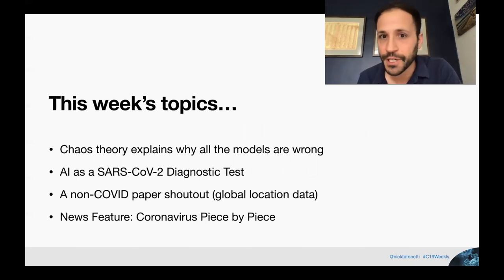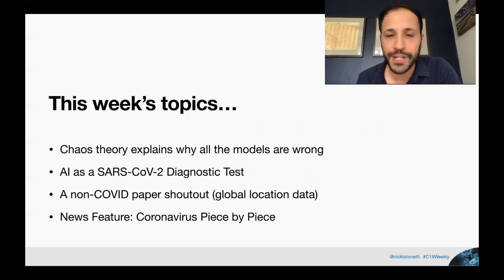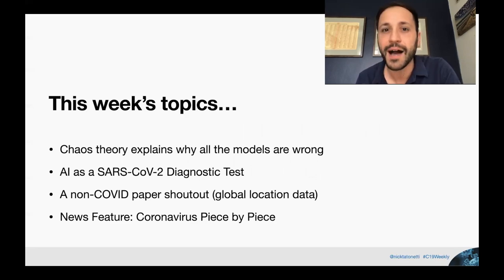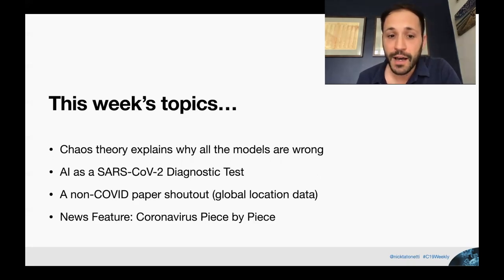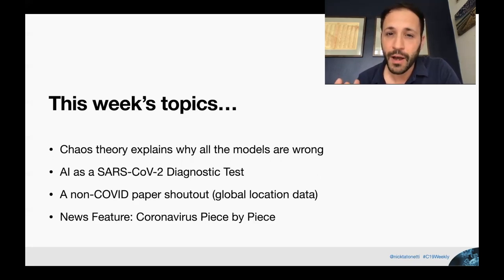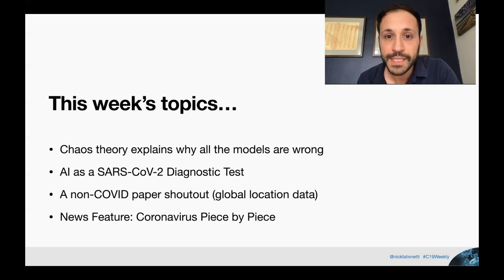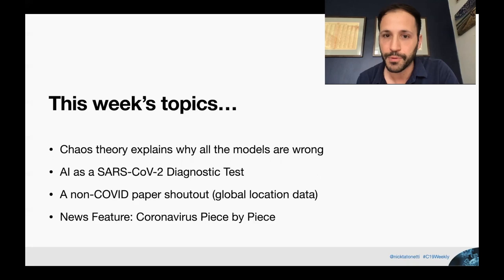In this week's episode, we're going to go over chaos theory and how it might explain why all the models seem wrong. We're going to talk about AI as a companion diagnostic to complement PCR-based tests. We're going to talk about a non-COVID paper that has some really important implications for COVID and the spread of disease. And we're going to present some really beautiful figures from a Nature article that goes over the details of coronavirus protein modeling and structure prediction.